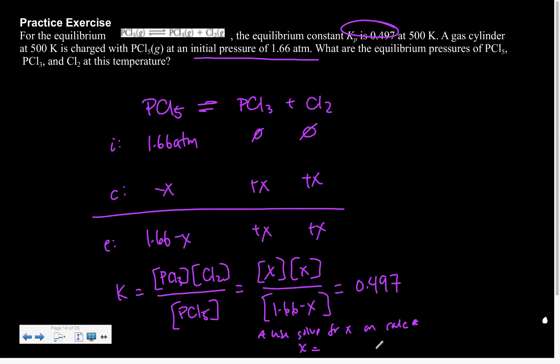Now, some of you might be like, oh, but if I do that, aren't I going to get two values for x? Yes, yes, you are. Only one of which will make sense, though. For example, if I get an x value that's bigger than this, does that make sense?